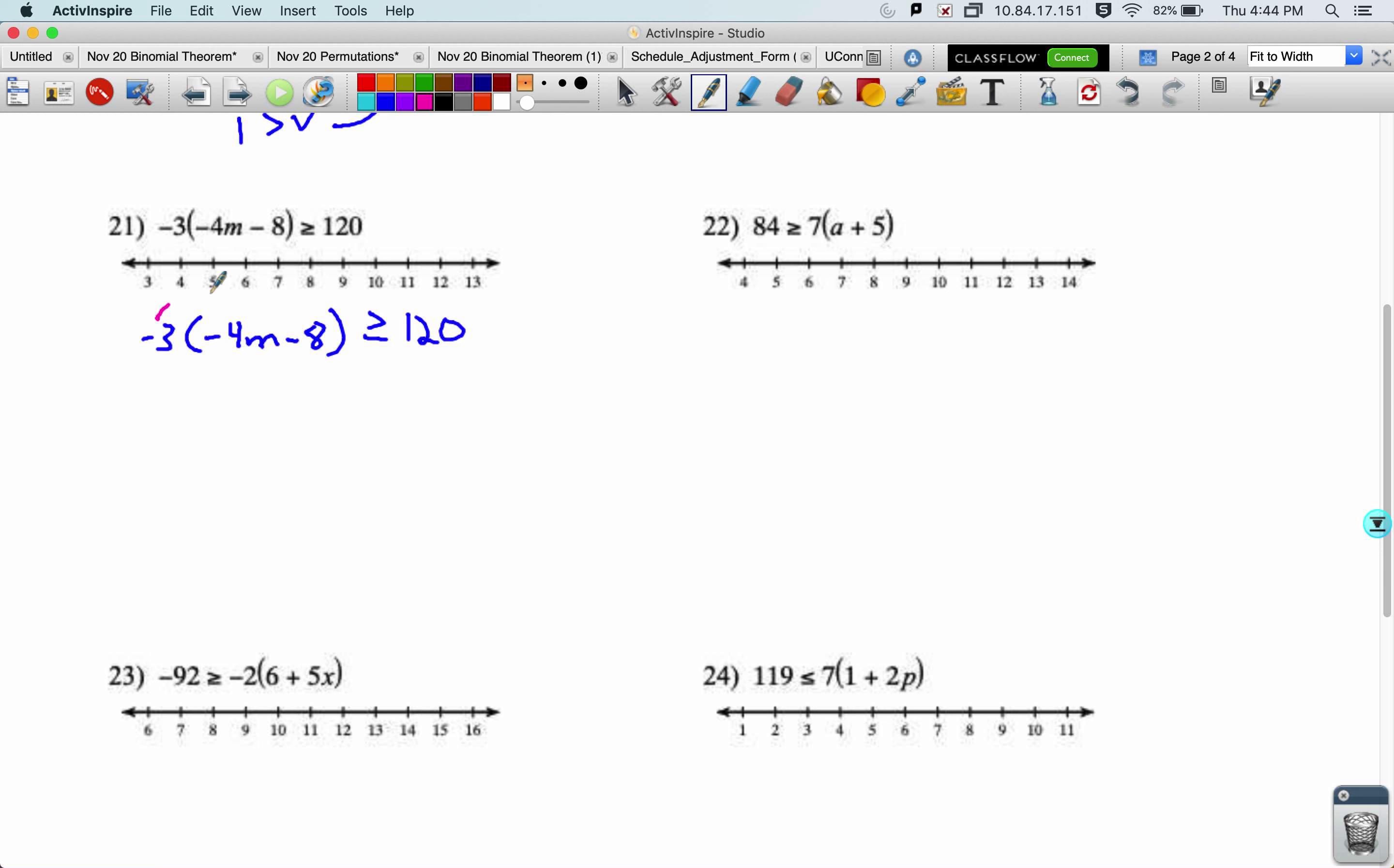Parentheses are actually the first thing we deal with, so I get rid of them by distributing anything that's in front. Negative 3 times negative 4m becomes a positive 12m, and this over here becomes a positive 24. We've got constants on both sides. I subtract 24 to move that 24 away from my variable. 12m is greater than or equal to 96. Divide both sides by 12.